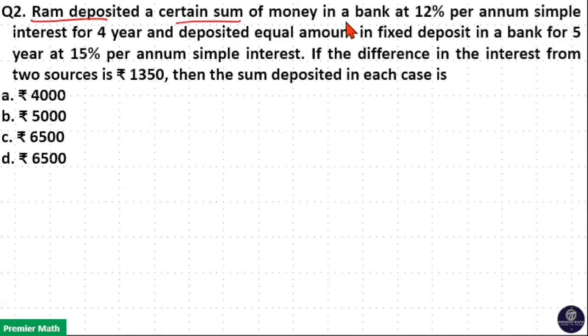Ram deposited a certain sum of money in a bank at 12% per annum simple interest for 4 years and deposited an equal amount in a fixed deposit in a bank for 5 years at 15% per annum simple interest. If the difference in interest from two sources is ₹1350, then the sum deposited in each case is: